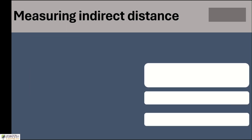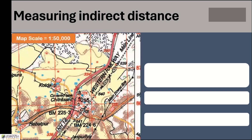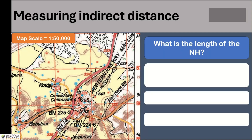Now, measuring indirect distances means calculating the distance between two points not in a straight line. Suppose two places are connected by a road that may not be straight — the distance along the road is an indirect distance. Here we have an example with a pink line — NH14. The question is: what is the length of this national highway, which is an irregular or curved line?